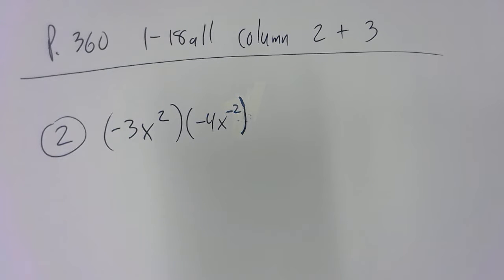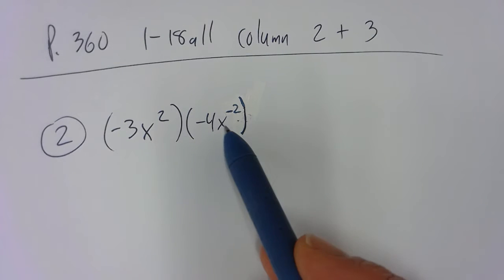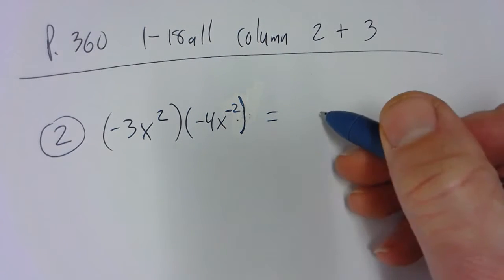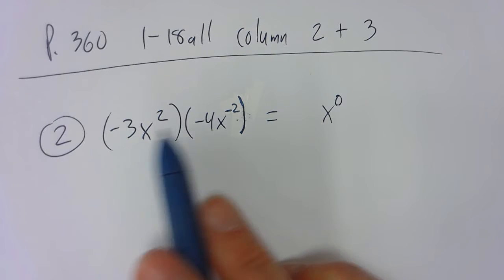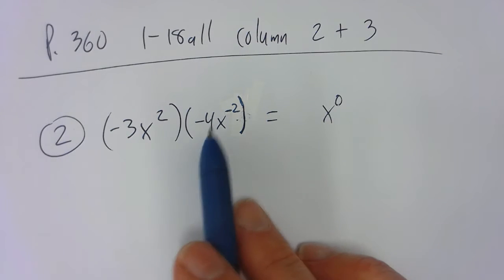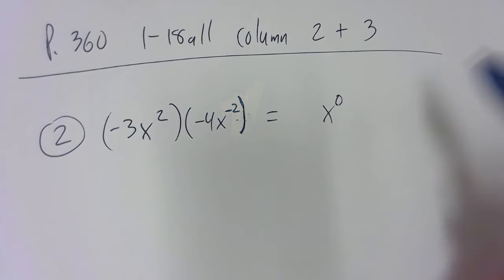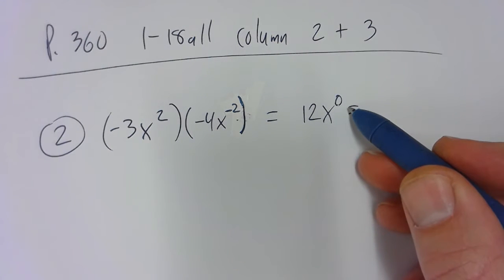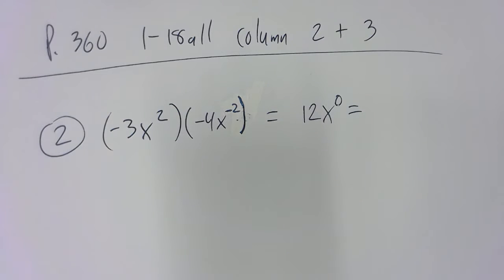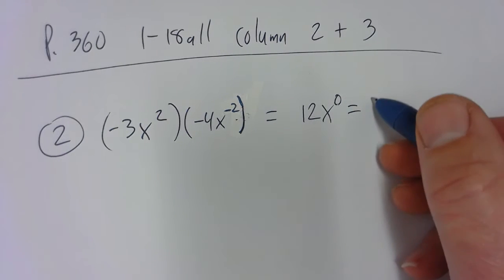In this video I'm going to help you with columns 2 and 3 on page 360. When we multiply like bases, we add the exponents. So this would be x to the 0 power, and then we just multiply the numbers. Negative 3 times negative 4 is a positive 12. Anything to the 0 power is 1, so that's just 1 times 12 — answer 12.